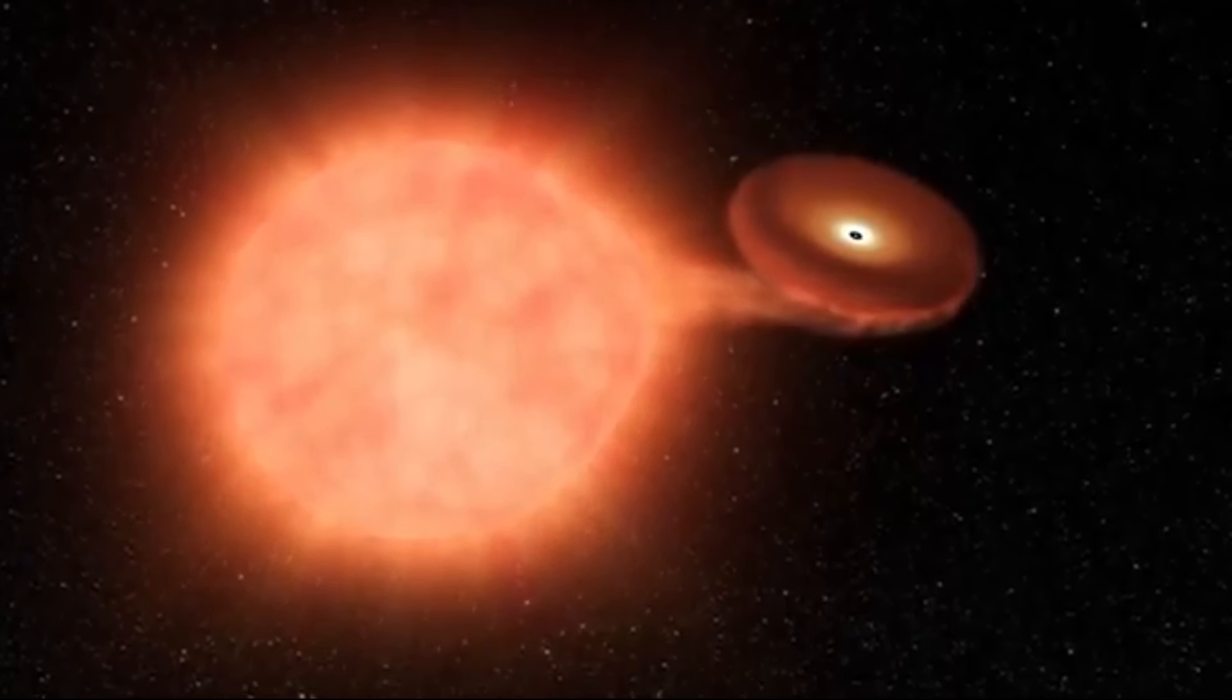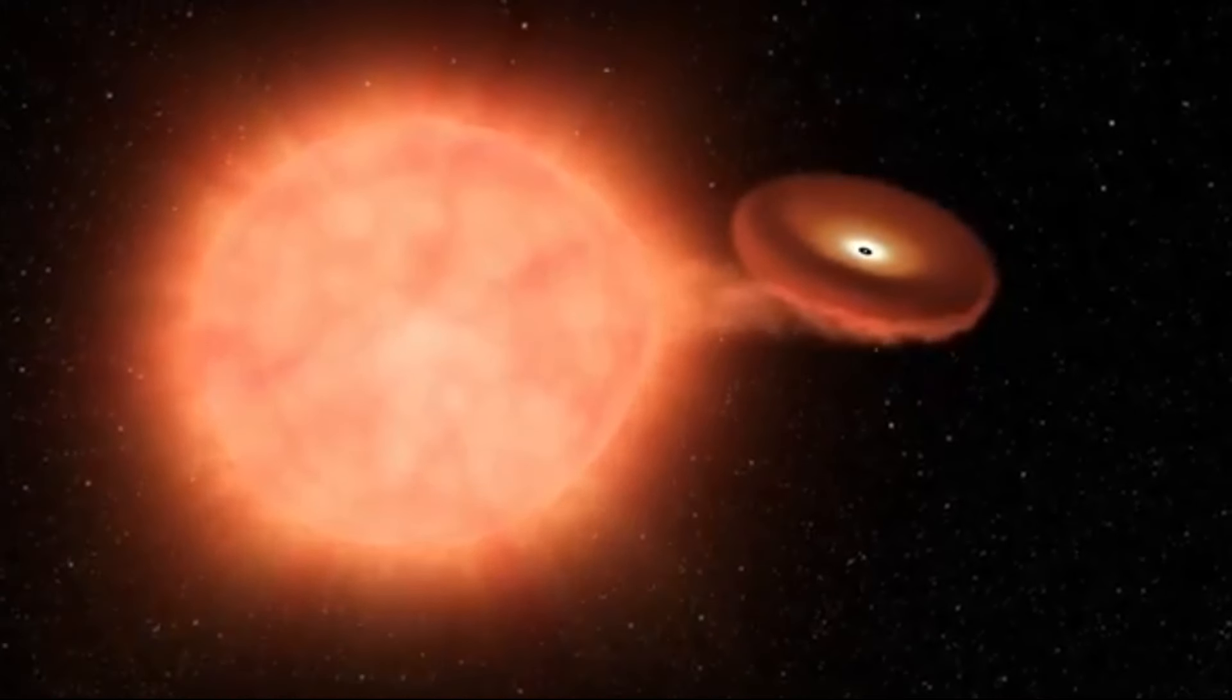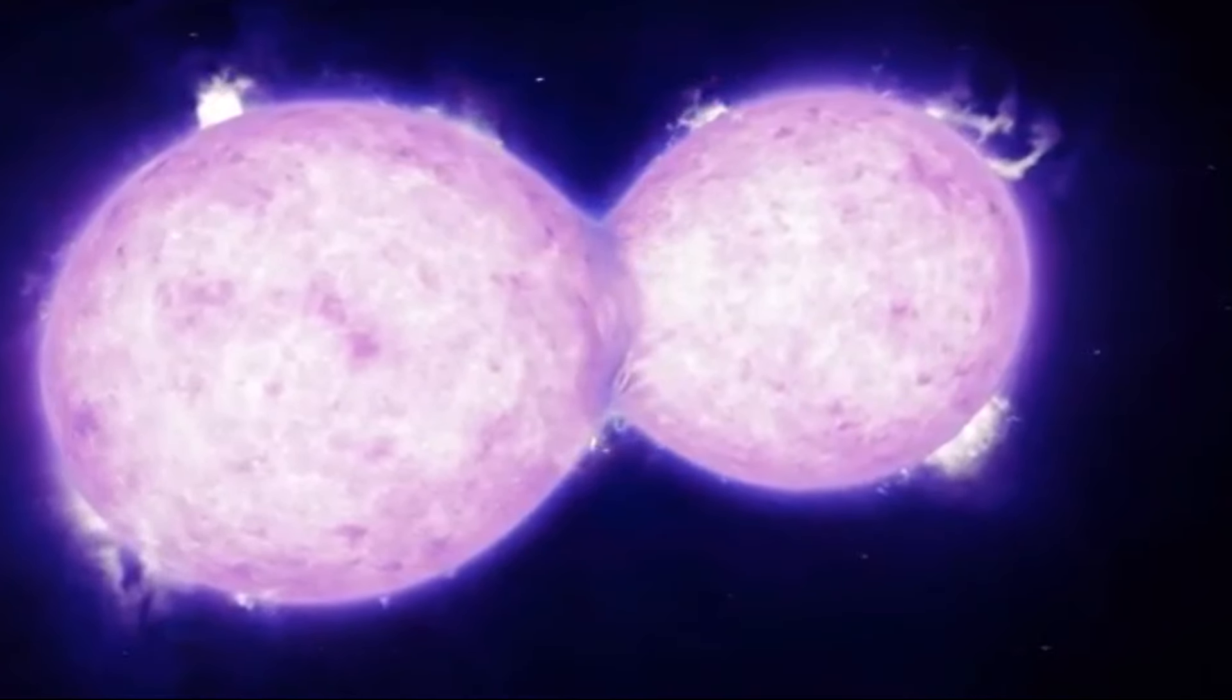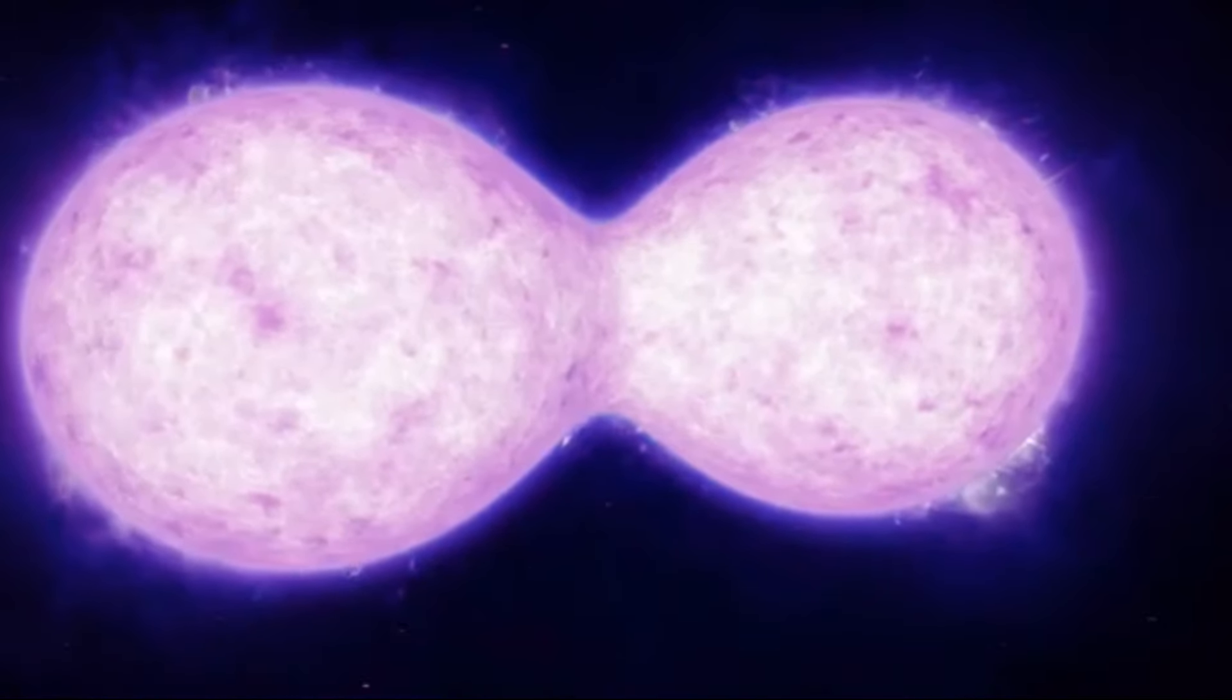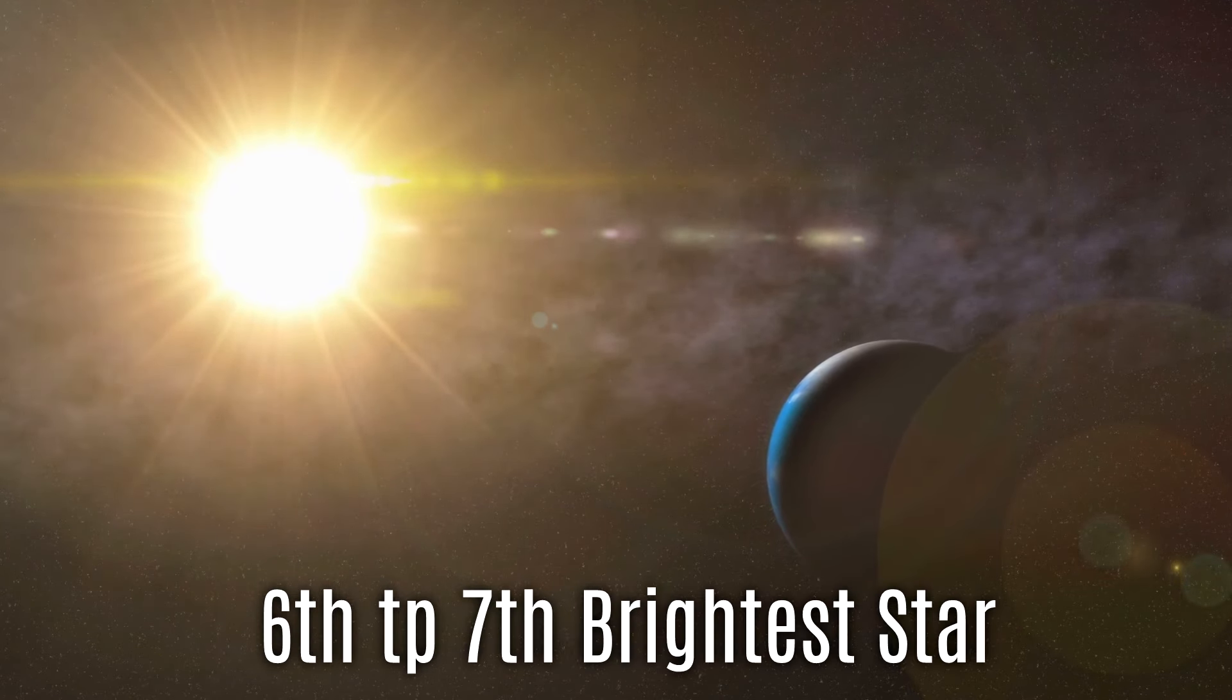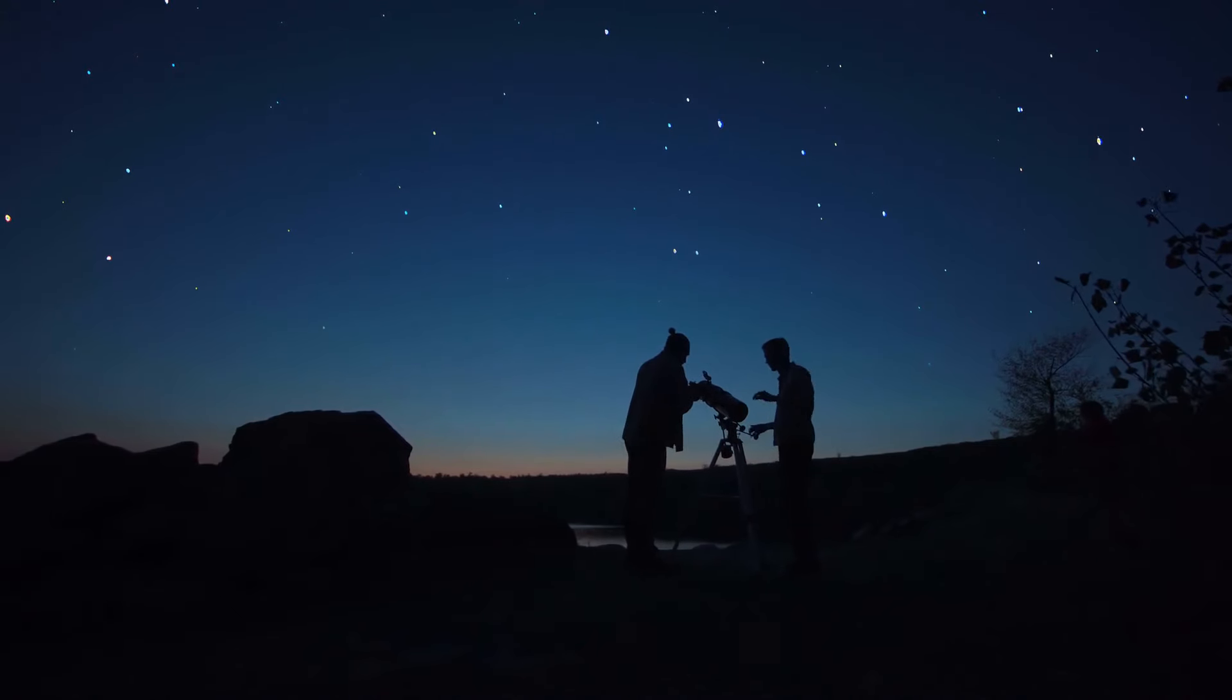In this context, Betelgeuse, a well-known red supergiant star located in the constellation Orion, typically has an average luminosity between 0.3 and 0.4 magnitudes. This impressive brightness places it among the 6th to 7th brightest stars visible in the night sky, making it a prominent fixture for stargazers and astronomers alike.